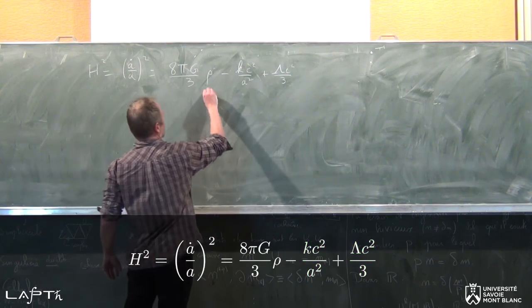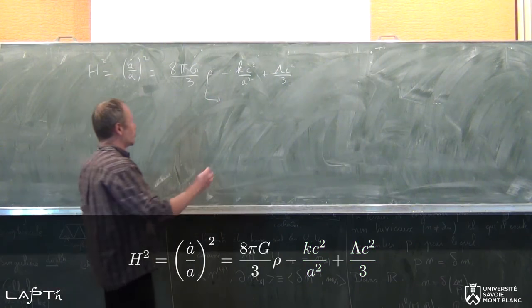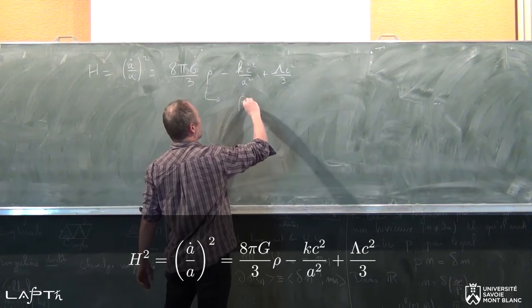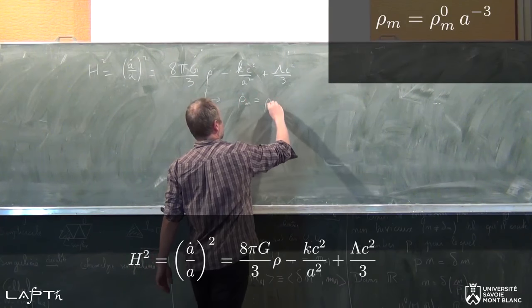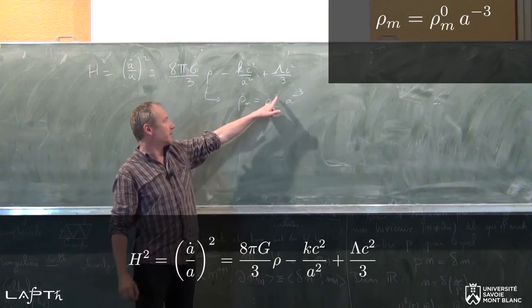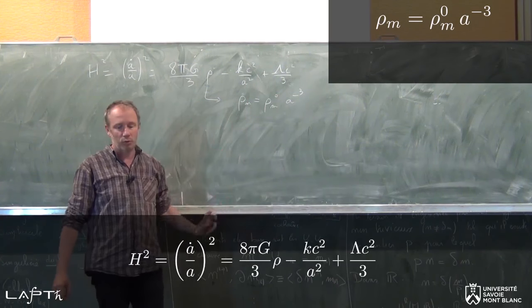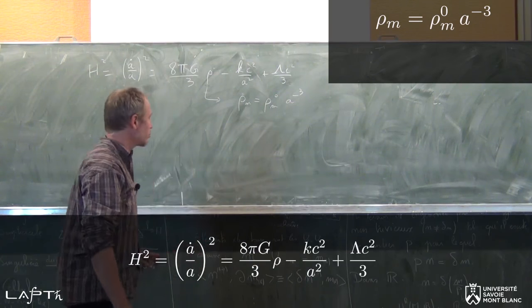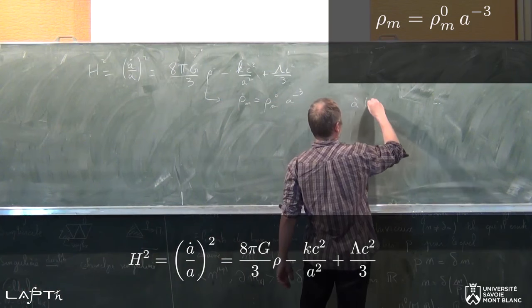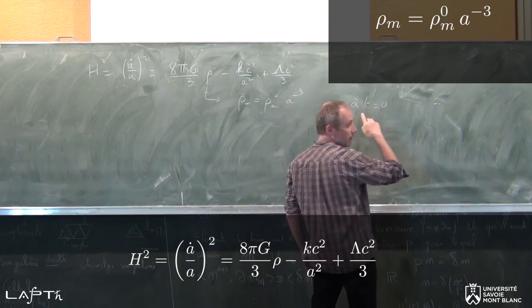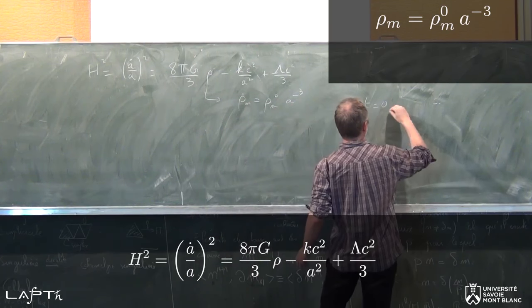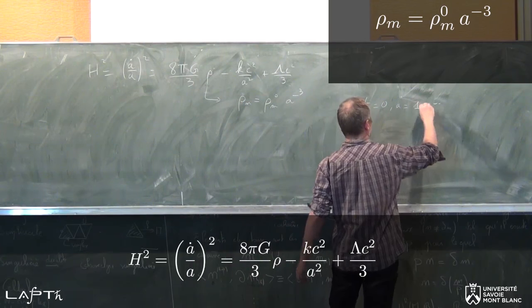On a vu comment ρ peut dépendre de A, comment ρ évolue quand l'univers s'expand. Par exemple, pour la matière, ρ_M s'écrit ρ_M0 fois A puissance moins 3, où l'indice 0 indique la valeur actuelle, et où j'ai pris la convention que a égale 1 aujourd'hui. Ce que j'appelle aujourd'hui, c'est AT égale à 0. Attention, AT égale à 0, ce n'est pas une origine ou quoi que ce soit, c'est vraiment le temps actuel. Aujourd'hui, on a AT égale à 0 et on a AT égale à 1, par convention.